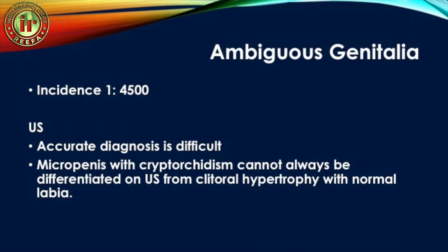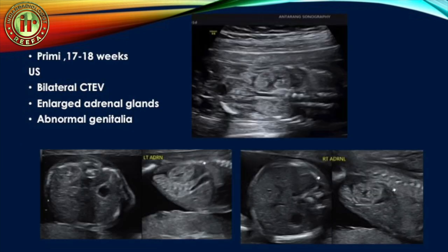The postnatal picture shows the classical elephant trunk appearance of cloacal exstrophy — the omphalocele is present, the bilateral bulges are the hemi-bladders, and through them small bowel herniation occurs giving the elephant trunk appearance. Now coming to ambiguous genitalia: the incidence is around 1 in 4,500. Accurate diagnosis on ultrasound is very difficult, as micropenis with cryptorchidism cannot always be differentiated from clitoral hypertrophy with normal labia.